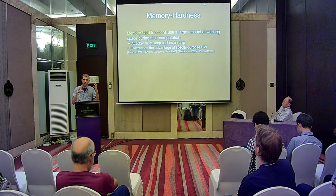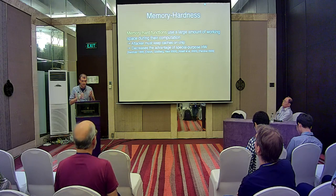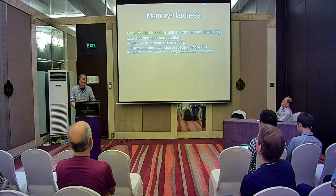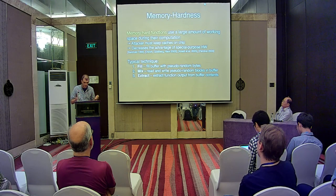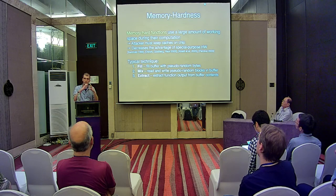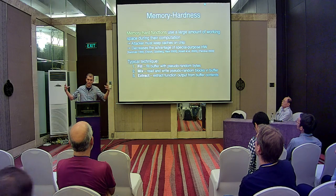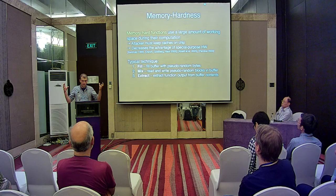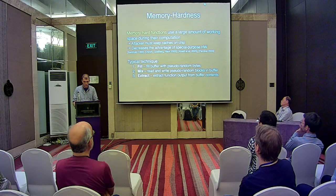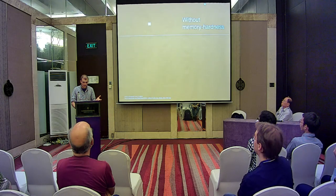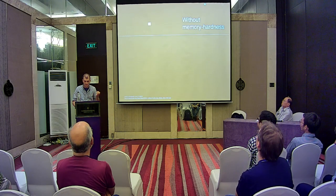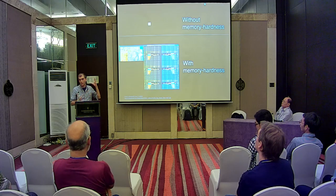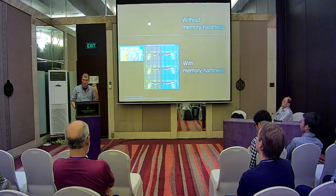This is where memory hardness comes in. A memory hard function is a function that uses a large amount of working space during its computation. If the internal state size of your hashing function is large, an attacker building special-purpose hardware will have to put a lot of cache on whatever they're building, which decreases the advantage of special-purpose hardware. The typical technique is: take your input (the password), use it to fill up a large buffer with pseudorandom bytes, mix up the state of the buffer in some special way, and extract the output by hashing together everything in the buffer.